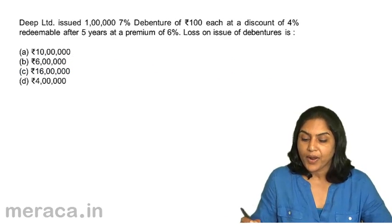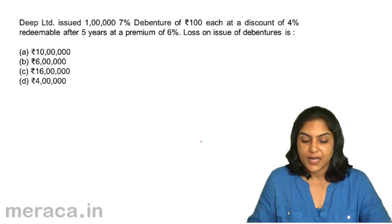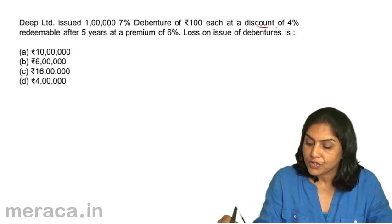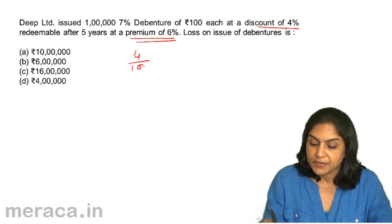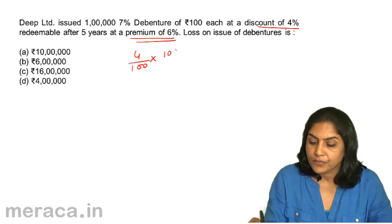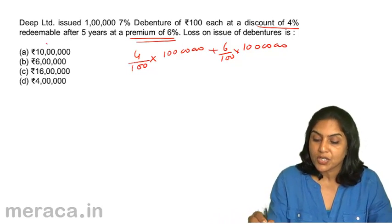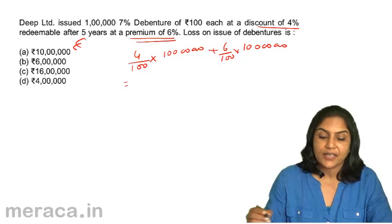Next, Deep Limited issued 100 7% debentures of ₹100 each at a discount of 4%, redeemable after 5 years at a premium of 6%. The loss on issue of debentures is: A. 10 lakhs, B. 6 lakhs, C. 16 lakhs, D. 4 lakhs. There are two kinds of losses: discount of 4% and premium of 6%. Discount on issue is a loss; premium on redemption is also a loss. Therefore, 4% + 6% = 10% of 100 lakhs = 10 lakhs. The correct answer is A.